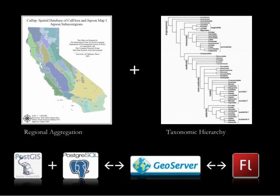Second, in the interface, we forced users to navigate the phylogenetic hierarchy first, limiting the total number of records they can request. This made client-server interactions much faster.